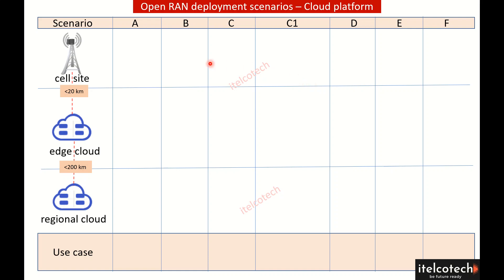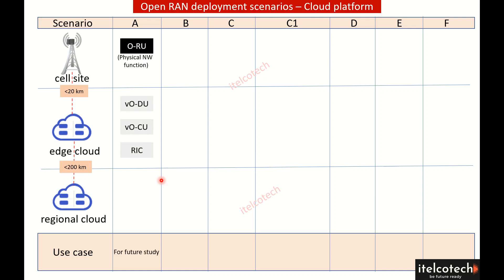Let's look into the different deployment scenarios for Open Radio Access Network. Within 20 kilometers of a cell site there is an edge cloud, and within 200 kilometers there is a regional cloud. Depending upon the kind of use cases we have, there are different deployment scenarios.